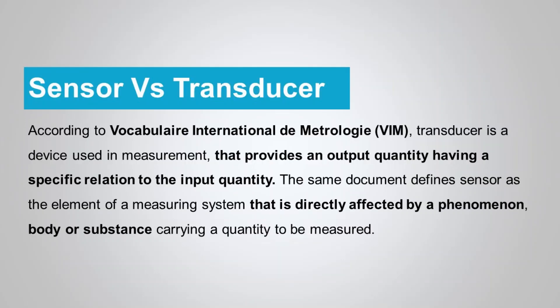It should be noted that this terminology is not standardized. According to the Vocabulaire International de Métrologie (VIM), a transducer is a device used in measurement that provides an output quantity having a specific relation to the input quantity. The same document defines a sensor as the element of a measuring system that is directly affected by a phenomenon, body, or substance carrying a quantity to be measured.